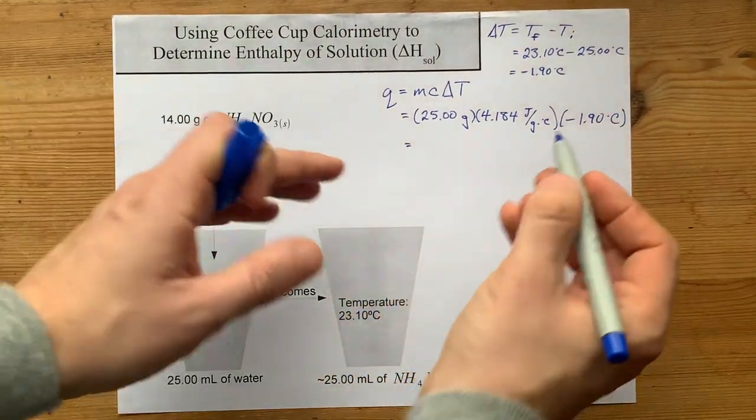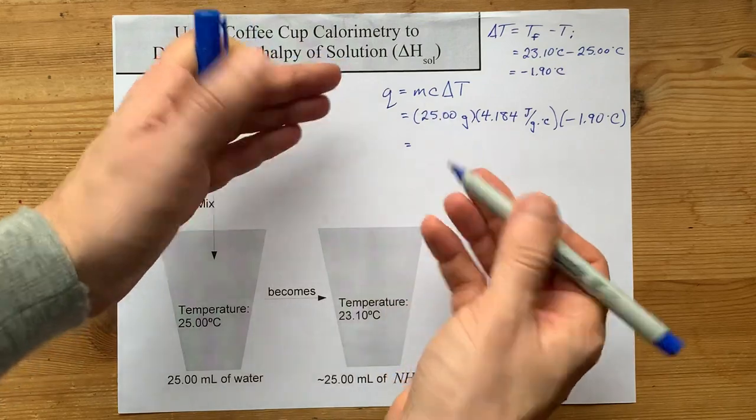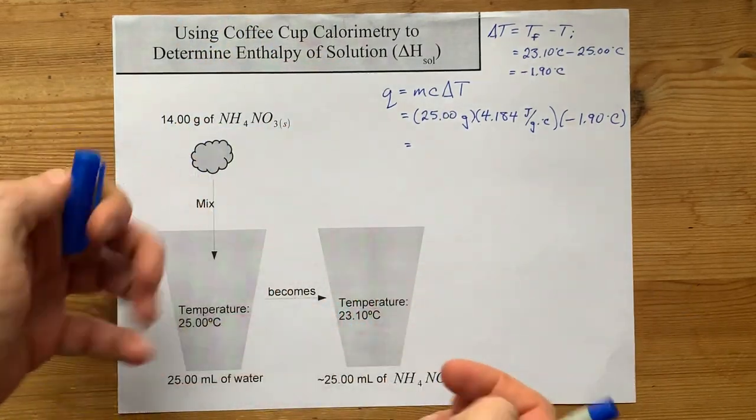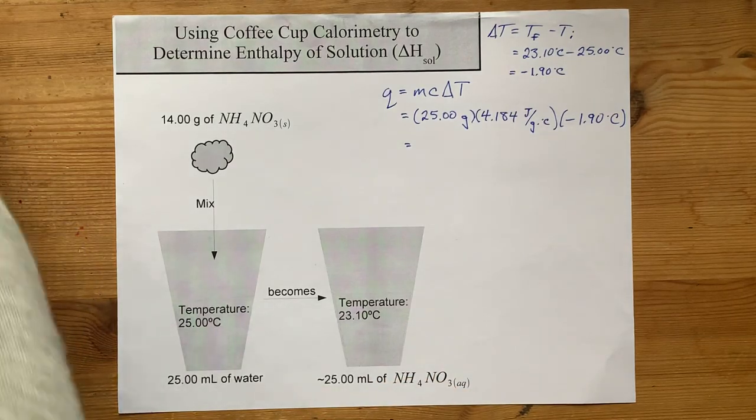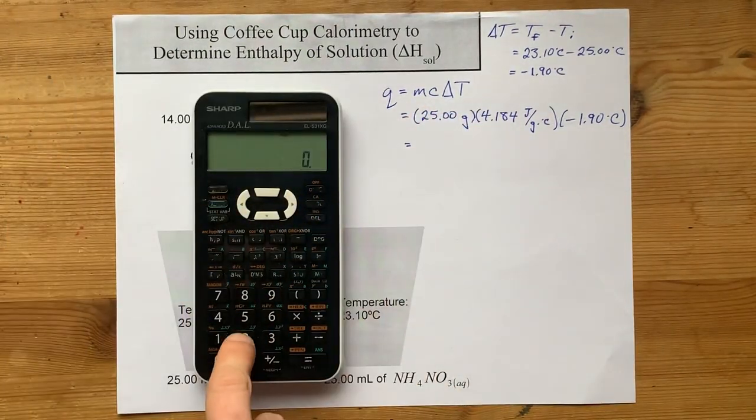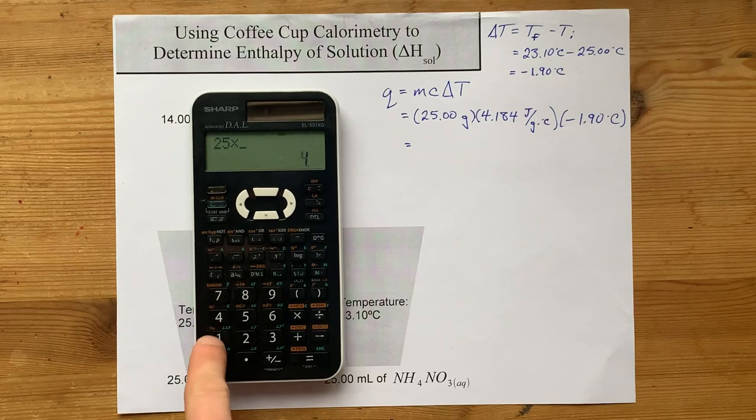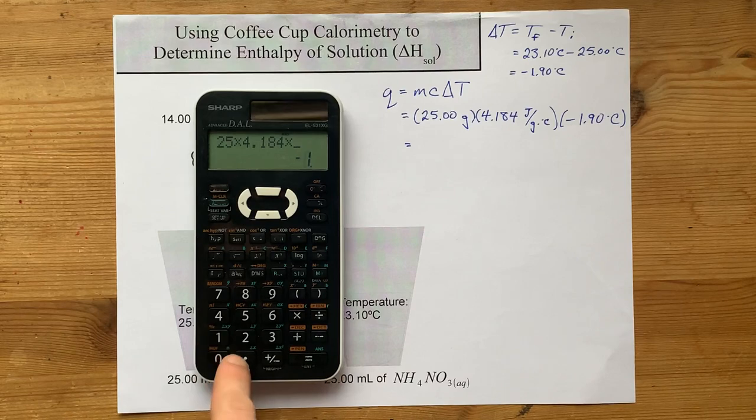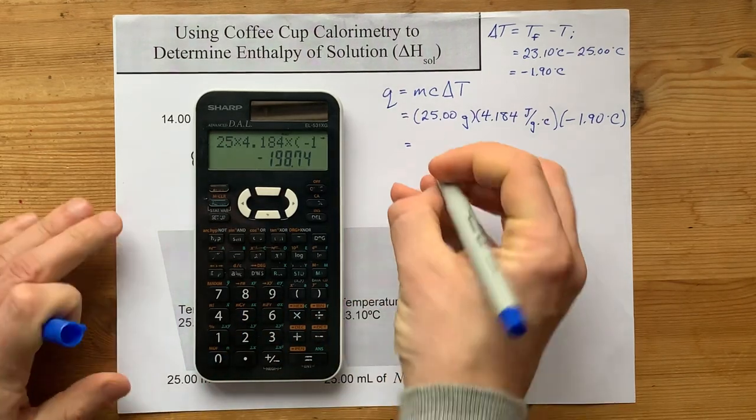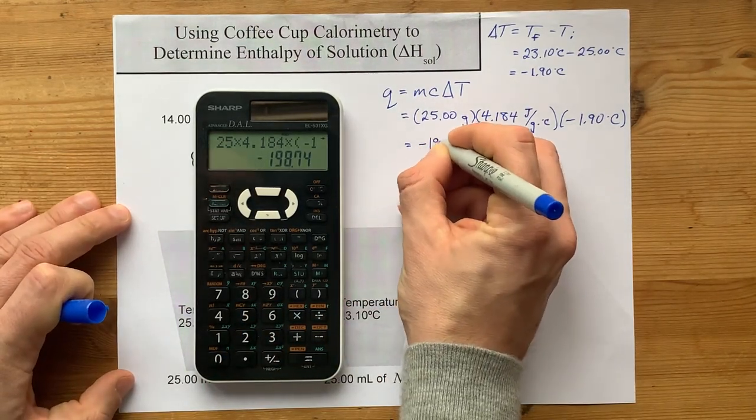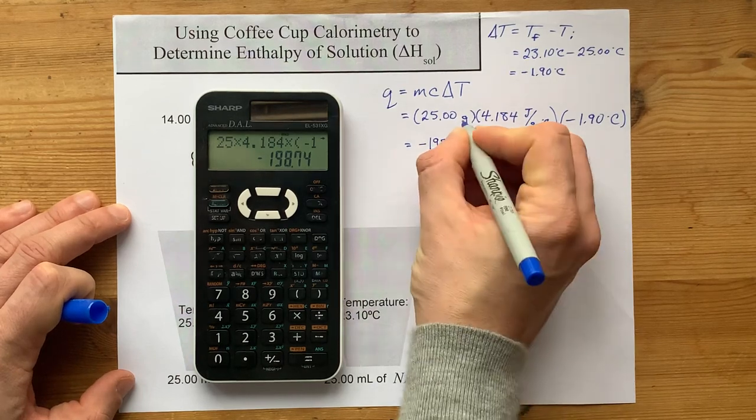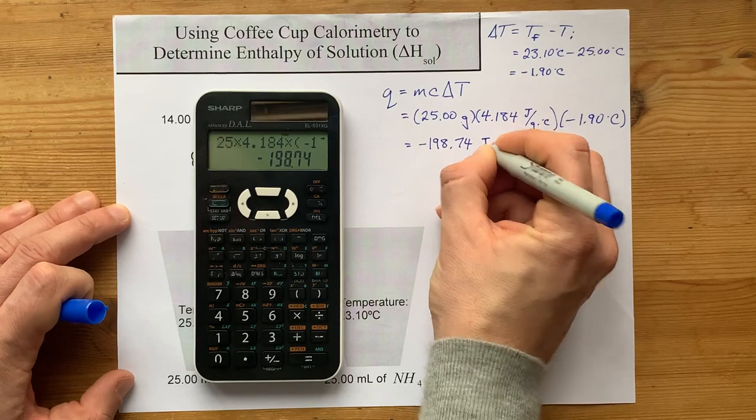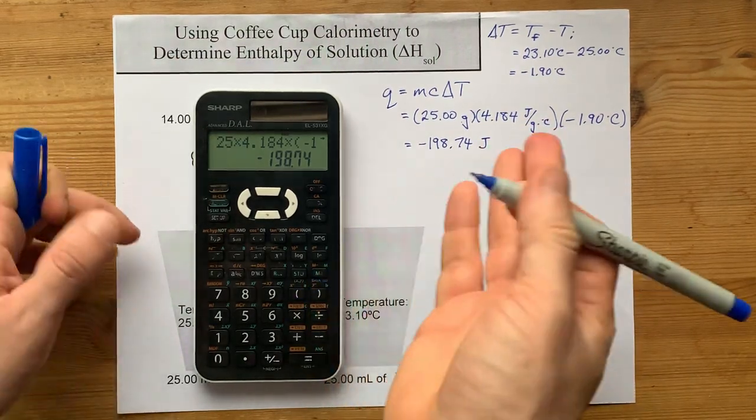Energy heat has escaped or been absorbed from the water, and that's what caused its temperature to go down. 25 times 4.184 times negative 1.9 gives me a Q of negative 198.74. The grams cancel, the degrees Celsius cancel, and the amount of energy that I'm left with here is in joules.